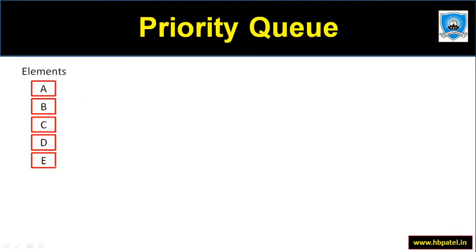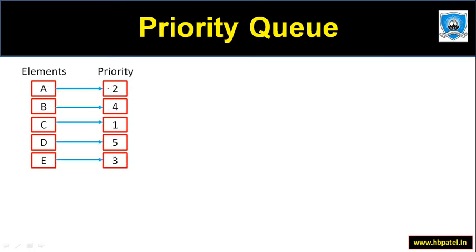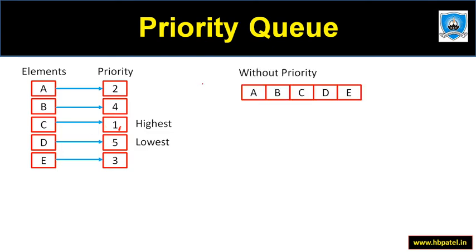In a normal queue we just have elements, but in priority queues every element has some priority. For example, C is having priority one, A is having priority two, and B is having priority four. A lower number means higher priority — so number one has the highest priority and number five has the lowest priority. C has the highest priority and D has the lowest priority.